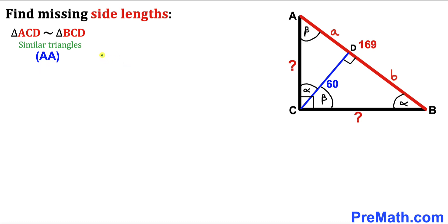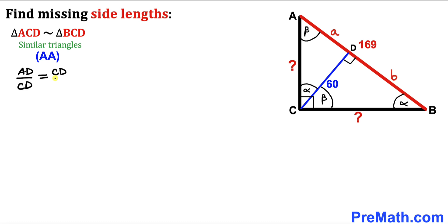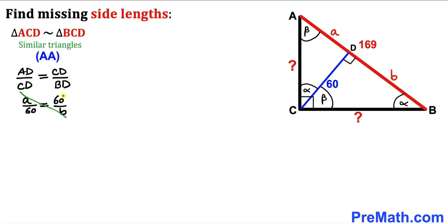Therefore we are going to have a proportion: the ratio of AD to CD is going to be equal to the ratio of CD to BD. The ratio of AD to CD equals the ratio of CD to BD. Our AD length is lowercase a, our CD length is 60, likewise CD is 60 and BD is lowercase b. Cross multiplying gives us a times b equals 60 times 60, which is 3600. Let's call this equation number 1.